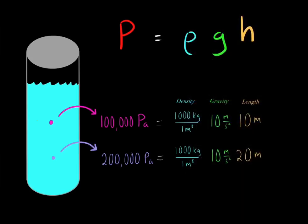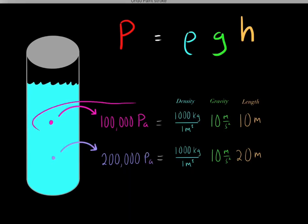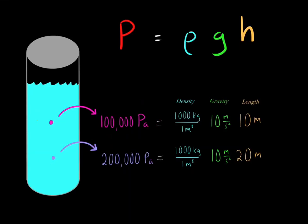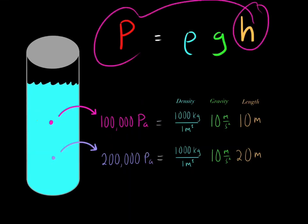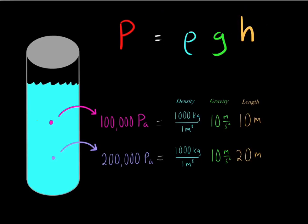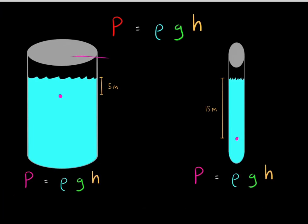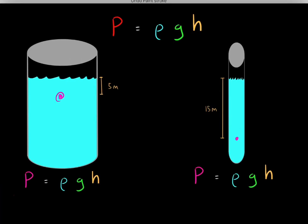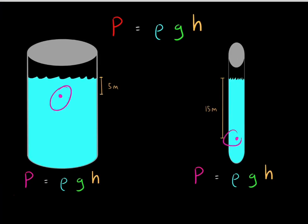The deeper point has higher pressure relative to the shallower point, because the height variable influences the pressure — which is logical and intuitive. Now let's try another example. Say we have two containers of water: a wide container and a thin container. In the wide container we're interested in the pressure 5 meters from the surface, and in the thin container we're interested in the pressure 15 meters from the surface.